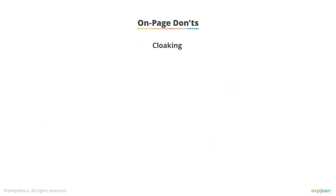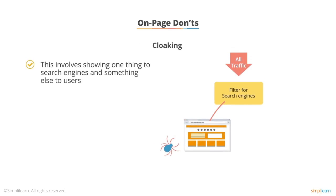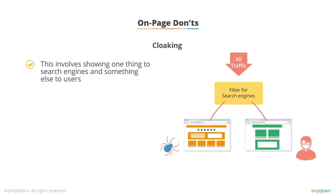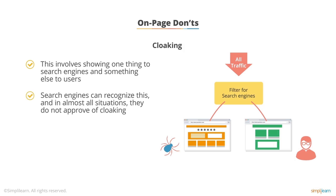The last thing is cloaking — the idea of showing one thing to search engines and something entirely different to humans. Like everything else on this list, cloaking is something that used to work, but search engines' algorithms have gotten much smarter and more clever. They can almost always figure out when you're showing one thing to search engines and something else to humans. With very few exceptions, which are in the process of going away, there's no reason to do this. It is not worth investing your time in.